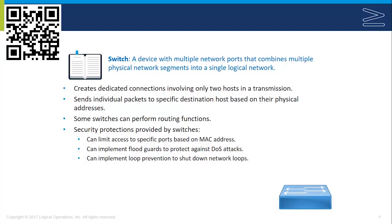Loop detection is built in using the spanning tree protocol in a switch, which prevents loops from happening. Switches are actually very similar to the older style bridge. The main difference is that the older style bridge was a layer 2 device that was really a replacement for routers and just had individual ports, whereas switches have far more ports than the bridge and are a replacement for hubs.